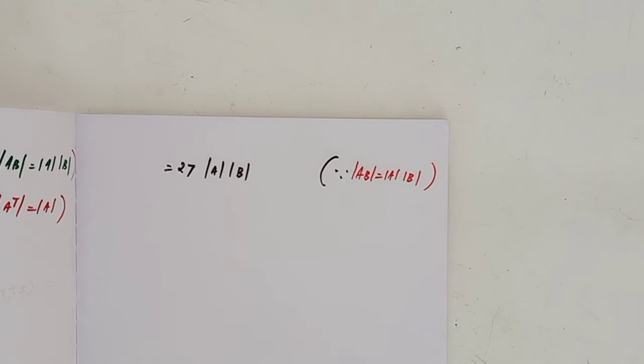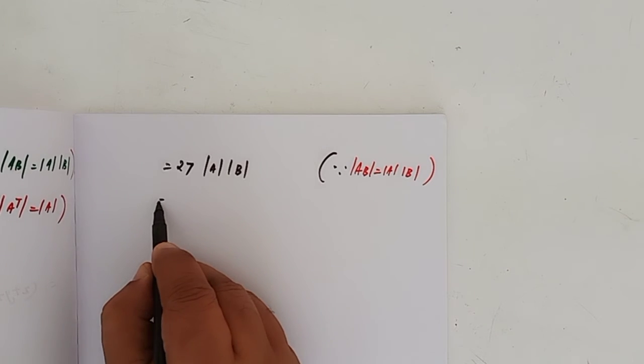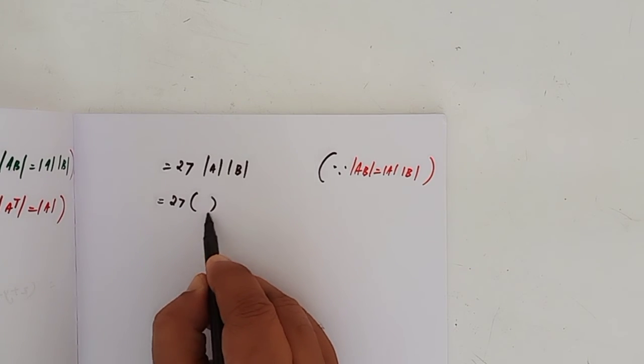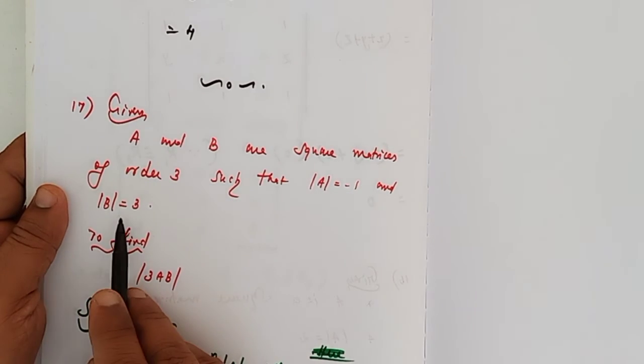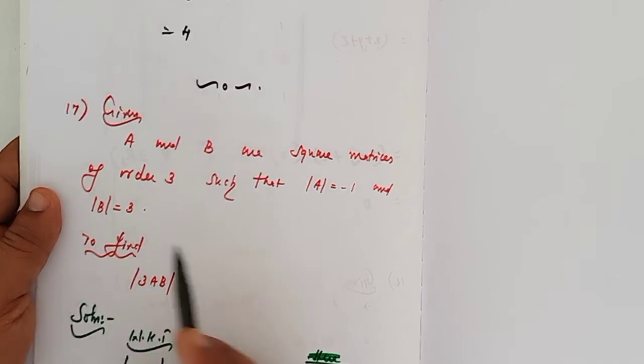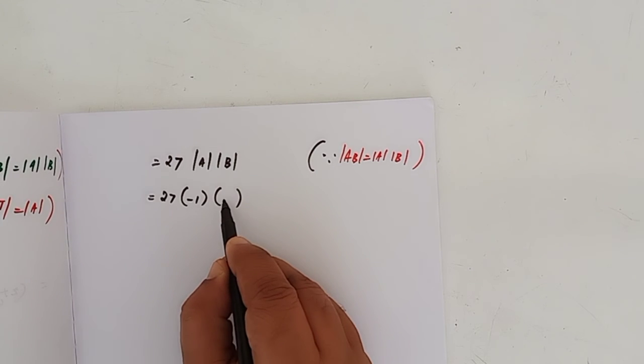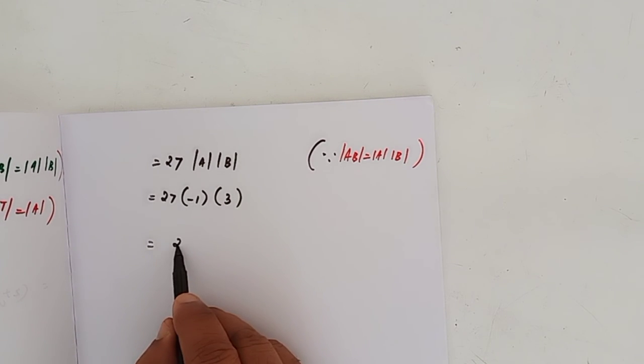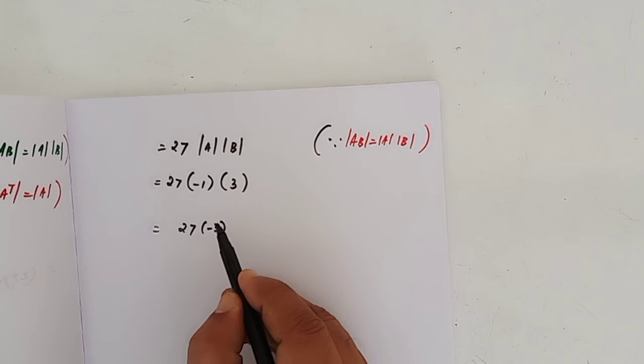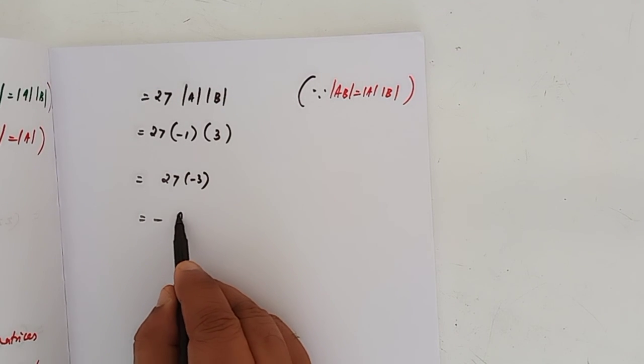Now we can replace the values. Determinant of A equals minus 1 and determinant of B equals 3. Minus 1 times 3 is minus 3, and 27 times minus 3 equals minus 81.